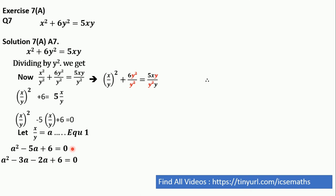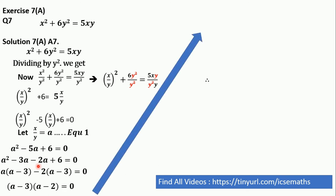And we can further simplify this equation by a square minus 3a minus 2a. We will segregate minus 5a into minus 3a minus 2a. And then we will take a minus 3 common from both terms, and that's why this will become a minus 3 times a minus 2 is equal to 0.